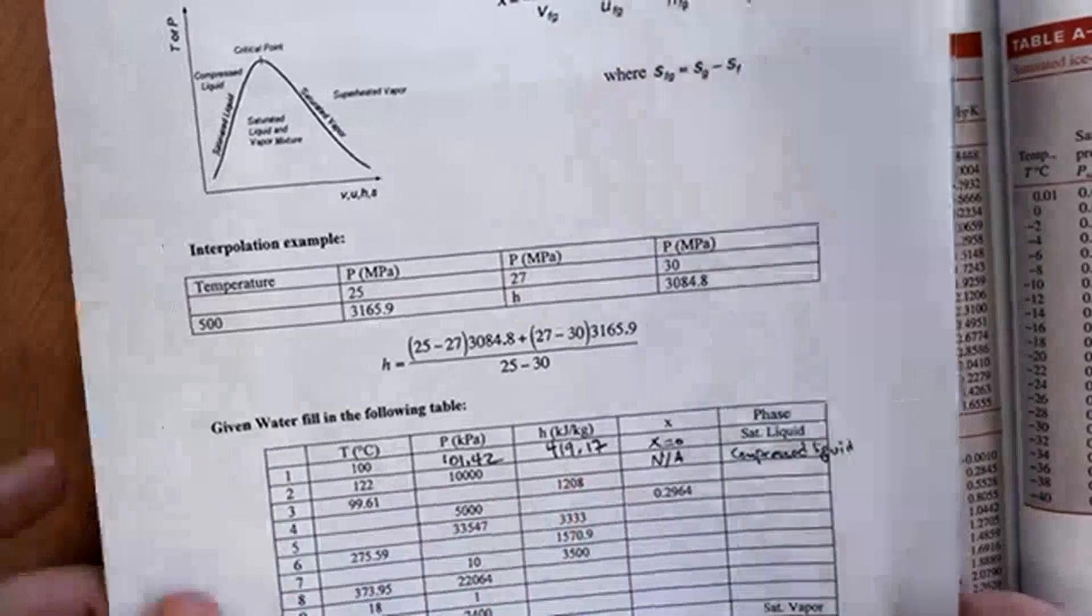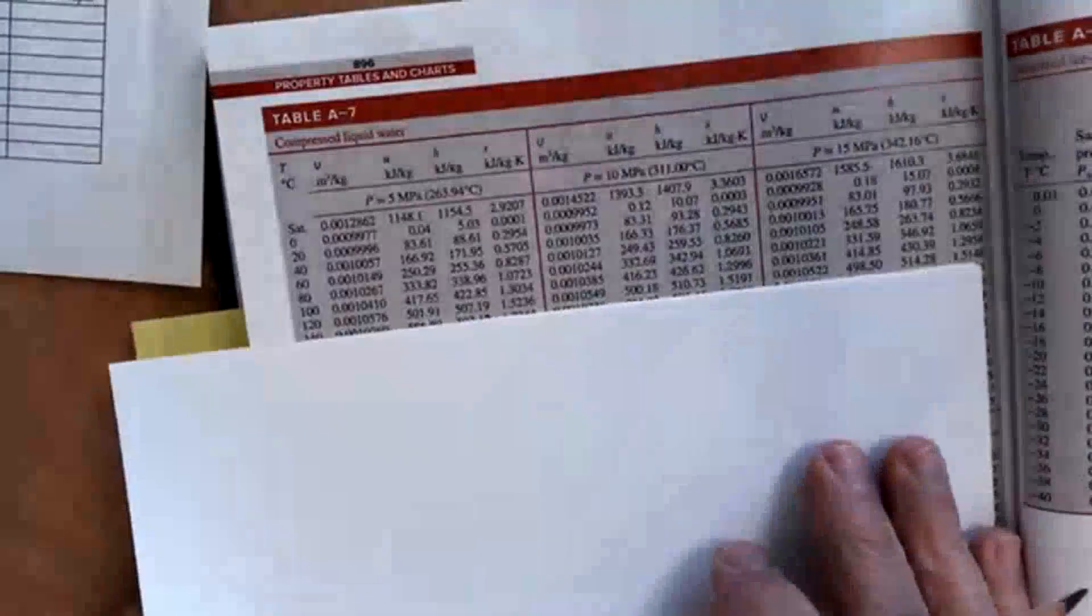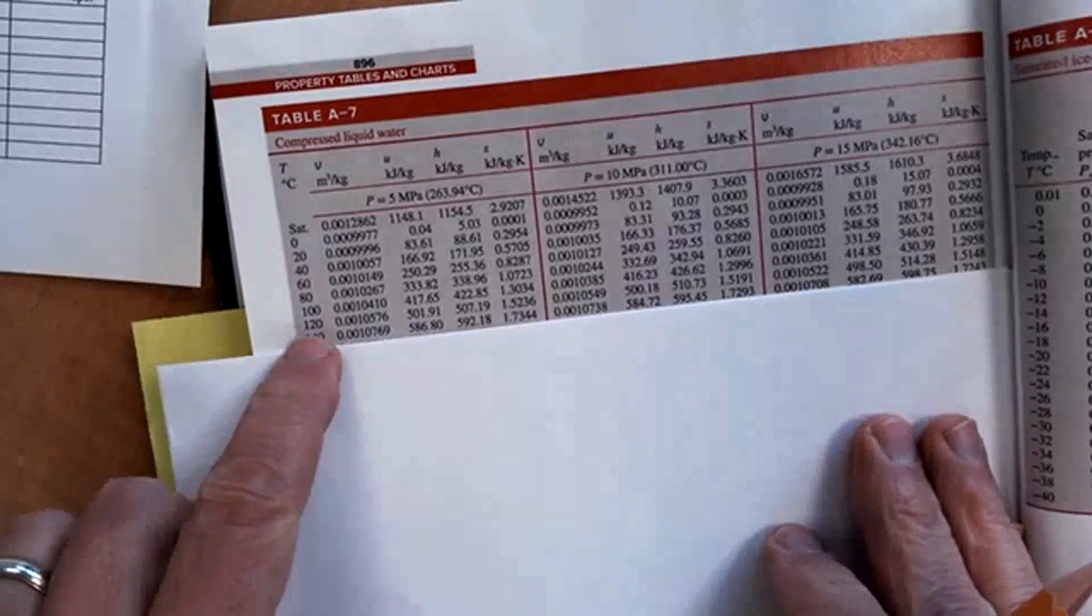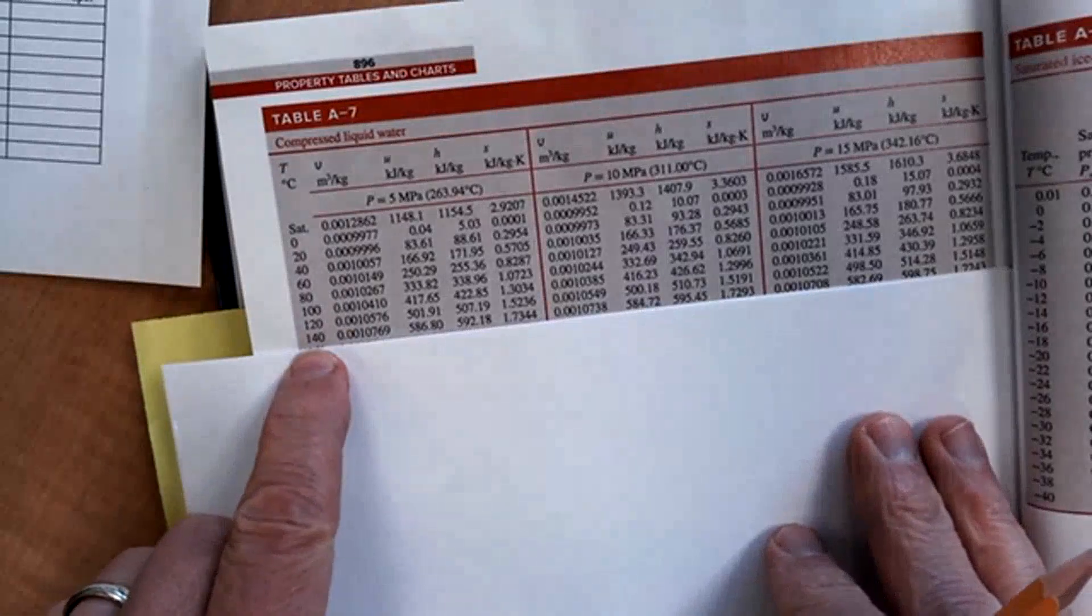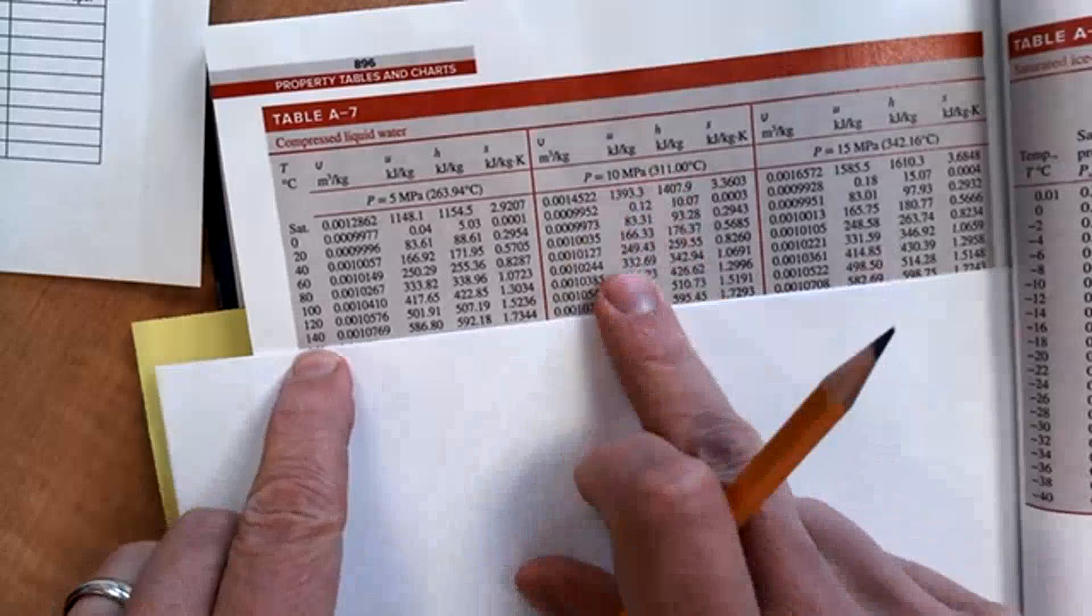So I need the H value. Well, this is going to be an interpolation of this chart. So at 100, I'm going to interpolate right here between 120 and 140 at this 10 megapascal.